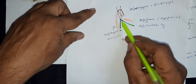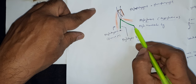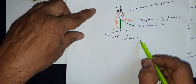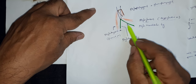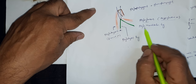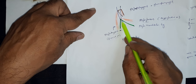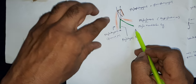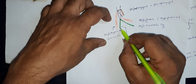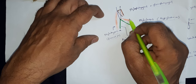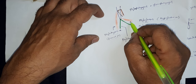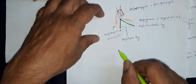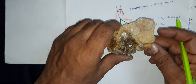The tip gives attachment to two ligaments: one is the stylohyoid ligament from the tip to the hyoid bone, and another is the stylomandibular ligament from the tip to the angle of the mandible. The importance of these ligaments and muscles we will discuss when we discuss the appropriate videos. So this is all about the temporal bone.